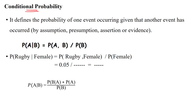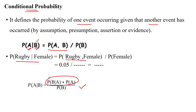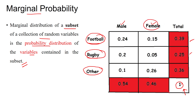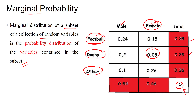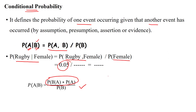Another type is conditional probability, where one event occurs given that another event has already occurred — event A depends on already-occurred event B. It is calculated as: probability of A given B equals probability of A comma B divided by probability of B, where probability of A comma B is the product of probability of B given A and probability of A. For example, probability of rugby given female: probability of female given rugby is 0.5, and total probability of female is 0.46, giving us the output.